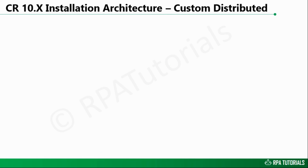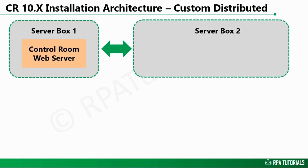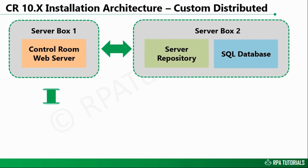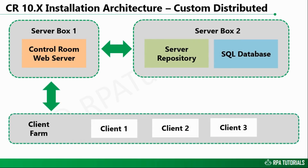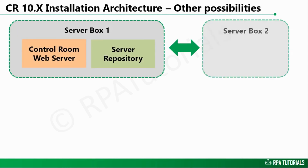In the custom distributed installation, the data tier or the shared data and services block sits on a different machine or server. Both the machines that host the application tier and data tier should be on the same domain. There are several other possible architectures for the Control Room setup as well, as shown in the diagrams.